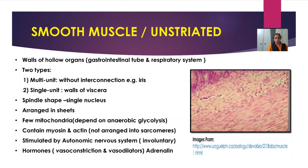Smooth muscles are arranged in sheets. Only few mitochondria are present, so they depend on anaerobic glycolysis. They contain myosin and actin, but these are not arranged into sarcomeres as in skeletal muscle — where sarcomeres are the portion between two Z-lines made up of thin actin I-bands and thick myosin A-bands. Smooth muscles are stimulated by the autonomic nervous system, making them involuntary in function. They also secrete hormones — vasoconstriction and vasodilator hormones such as adrenaline.